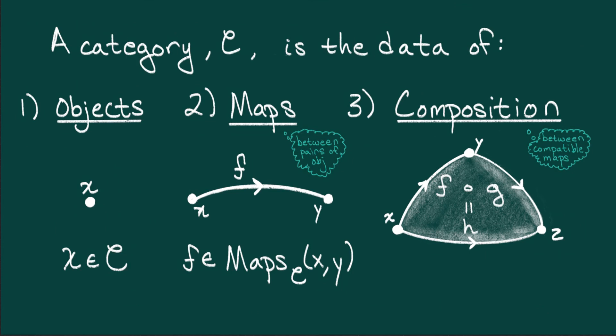Geometrically, we represent these as zero, one, and two-dimensional shapes. Once this is specified, you need to check two conditions.